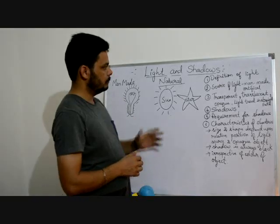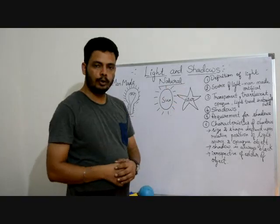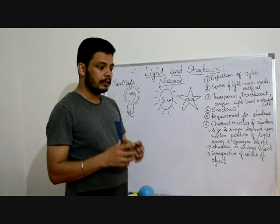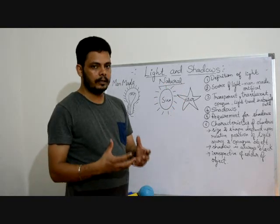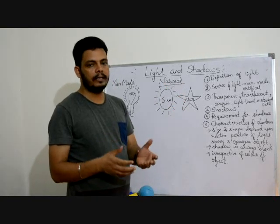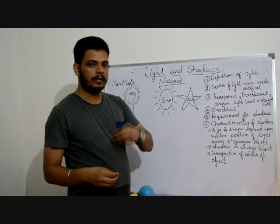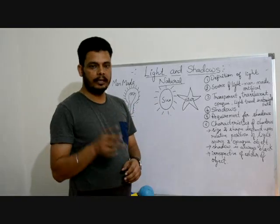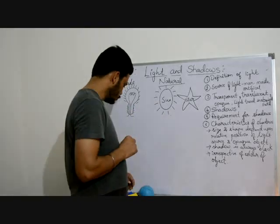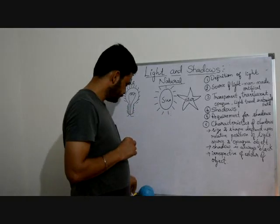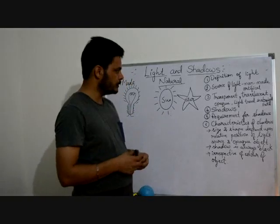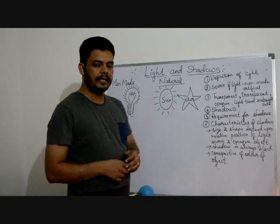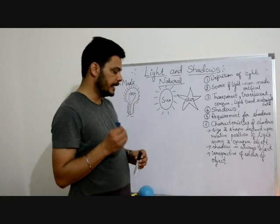Now we talk about the sources of light. Sources of light are those things from which light is generated. There are two kinds of sources of light: the first is manmade and the second is natural.